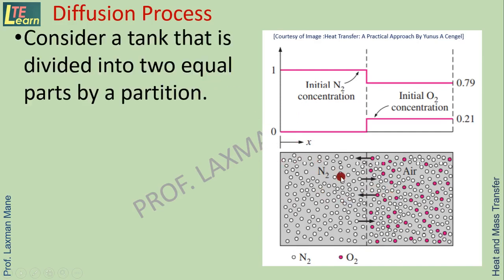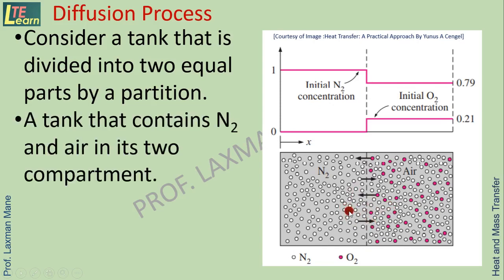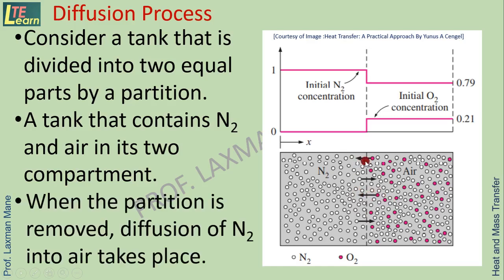You see, this is a tank that is divided into two equal parts by a partition. It contains nitrogen and air in its two compartments. When this partition is removed, that is shown by dotted line, there will be mixing of N2 molecules and oxygen molecules. Before the mixing, the concentration will be high of N2. After the mixing, concentration of N2 will be 0.79 and oxygen will be 0.21.